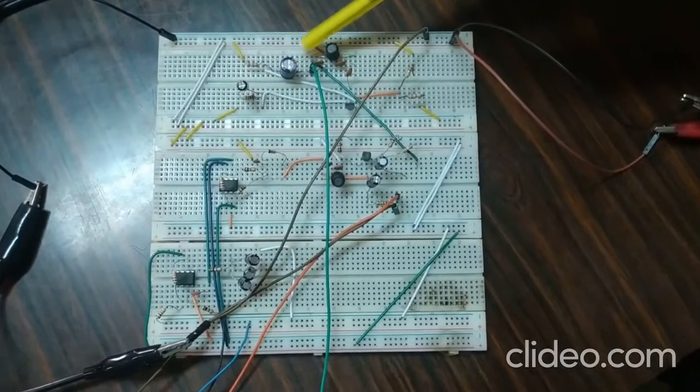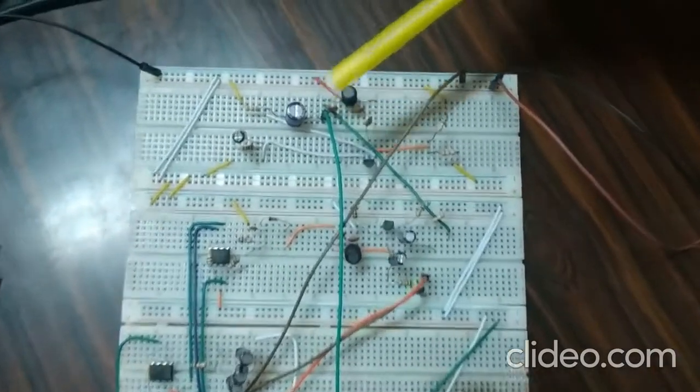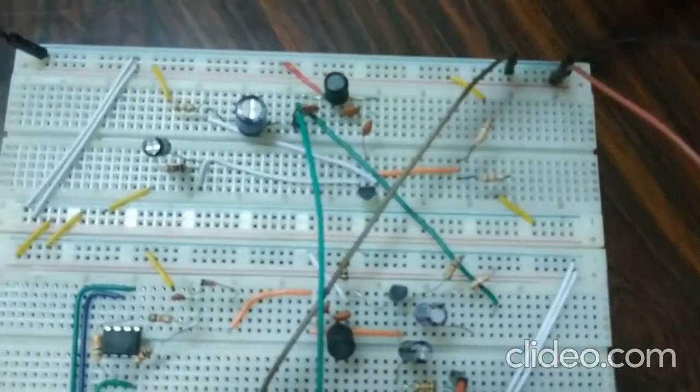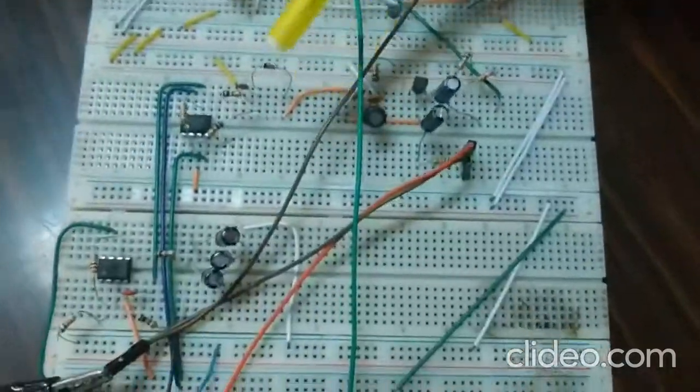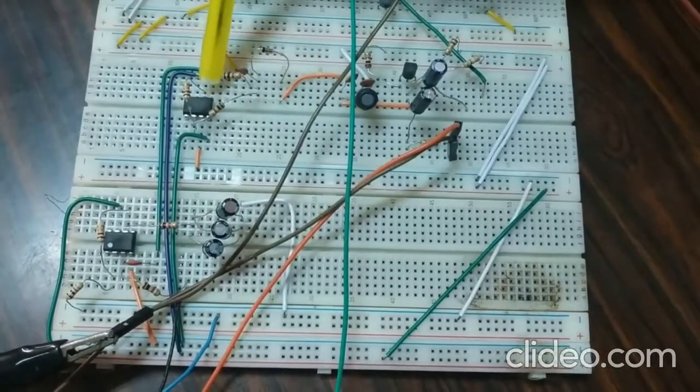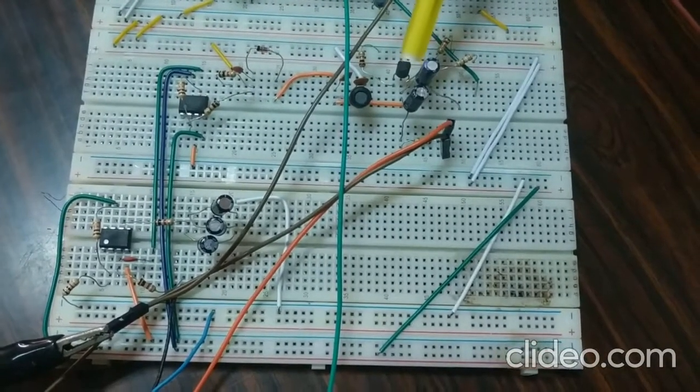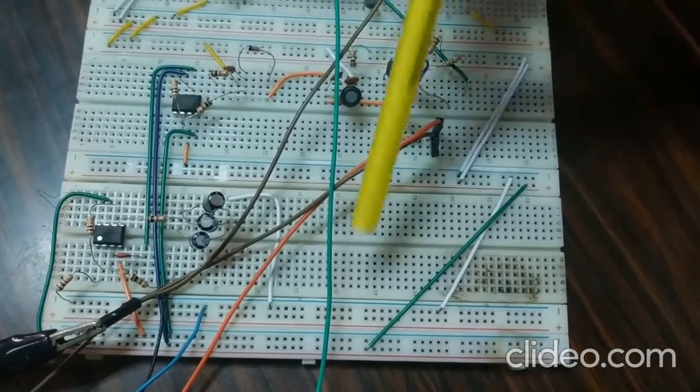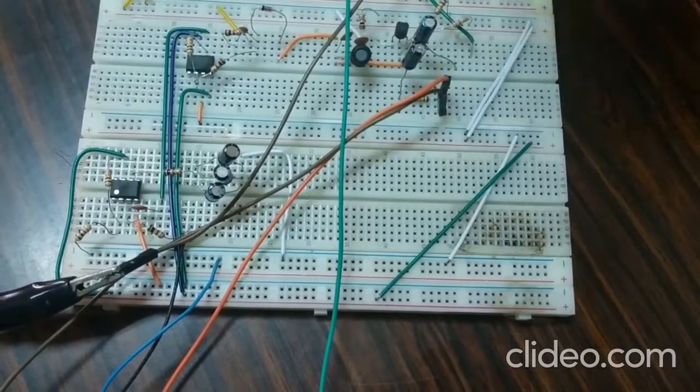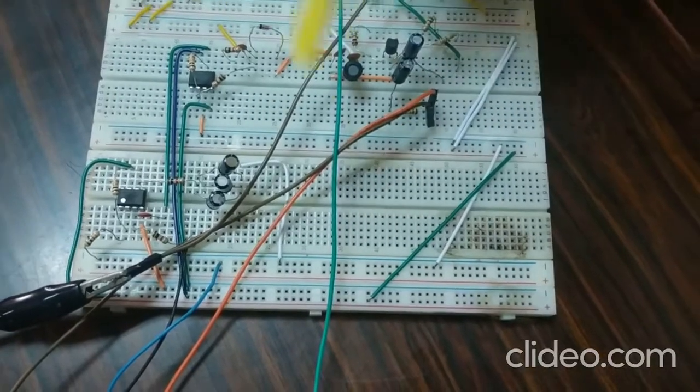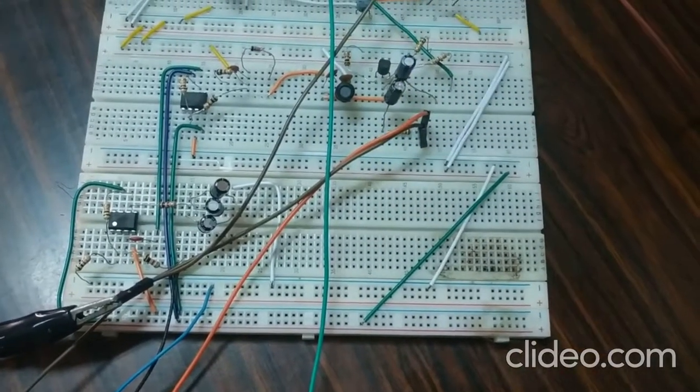The first board here contains the oscillator in which we used a Colpitts oscillator to generate the carrier frequency. The second board contains the modulator on the left side and the demodulator on the right. And the third board contains low-pass filters and amplifiers from where we finally received the received message signal.